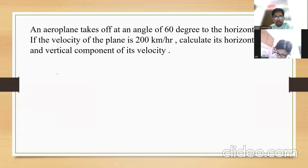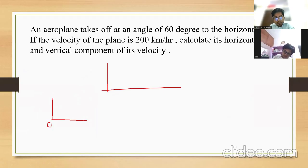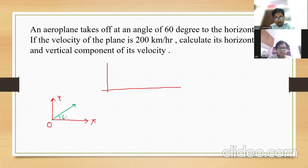First of all, draw the x and y axes. This is the origin. In this question, the aeroplane takes off at an angle of 60 degrees to the horizontal - the aeroplane is going to take off like this, at 60 degrees. And the velocity of the aeroplane is 200 km per hour.